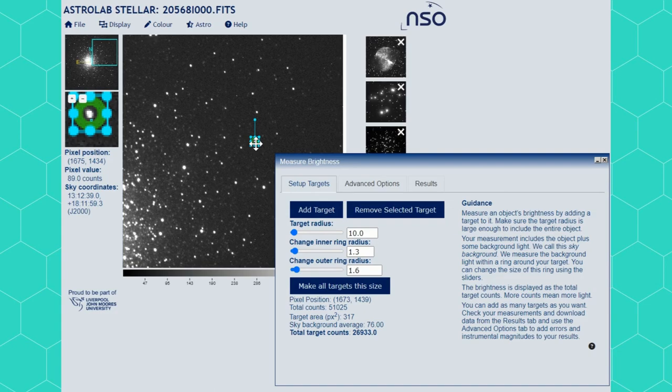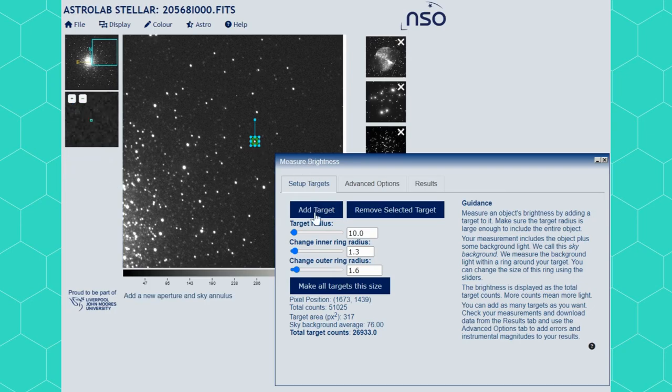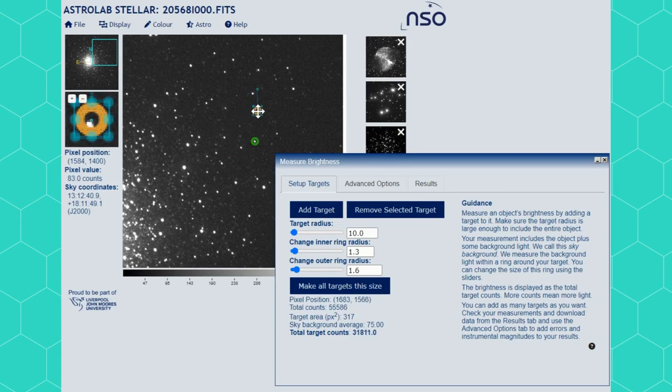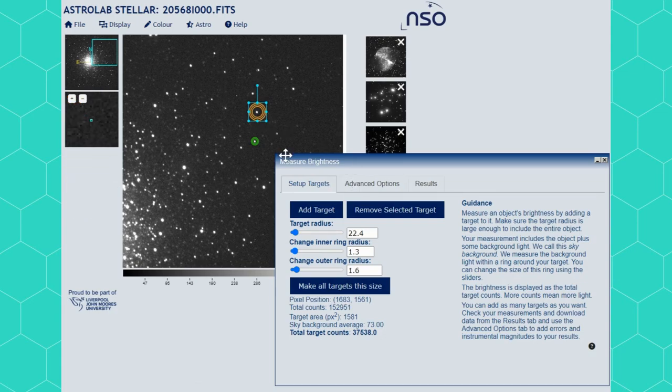Now if I want to compare the stars it's important to leave my target the same size so I can add another target which will automatically keep the same dimensions. If you accidentally change the size you can readjust by selecting your preferred target and clicking the button that says make all targets this size.